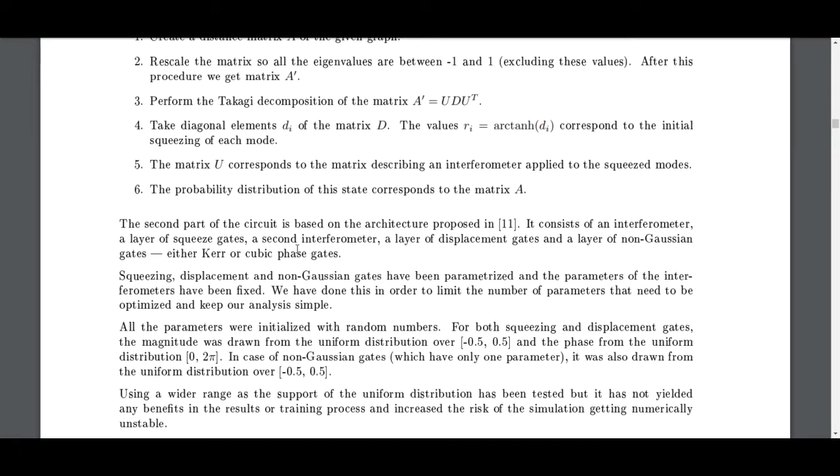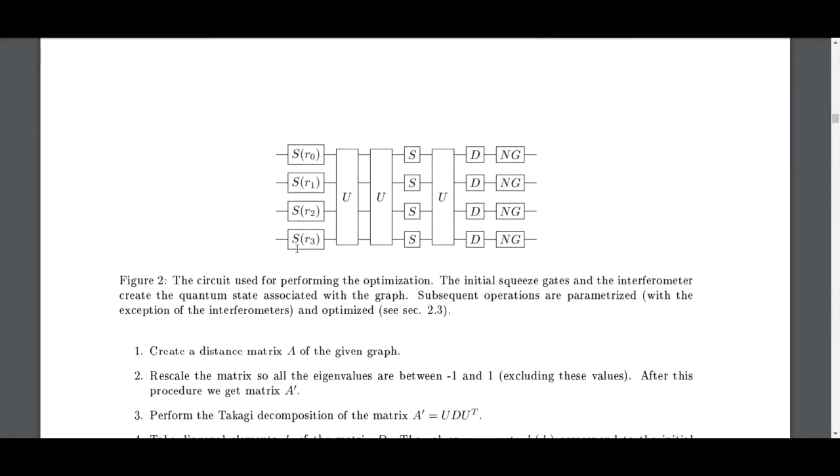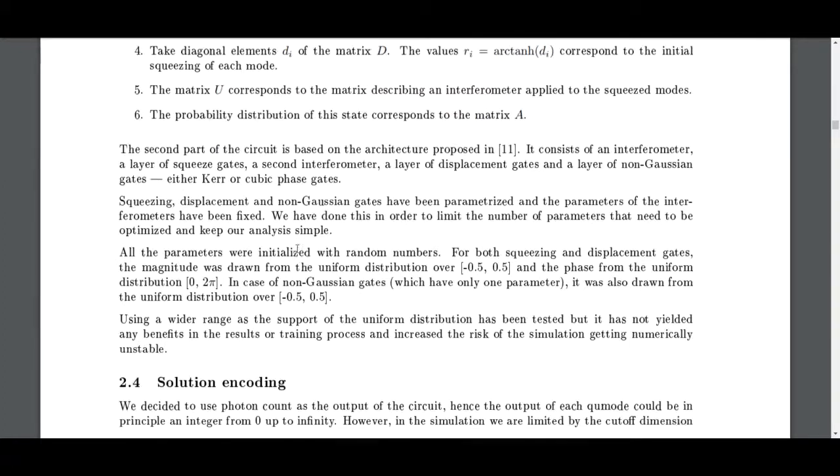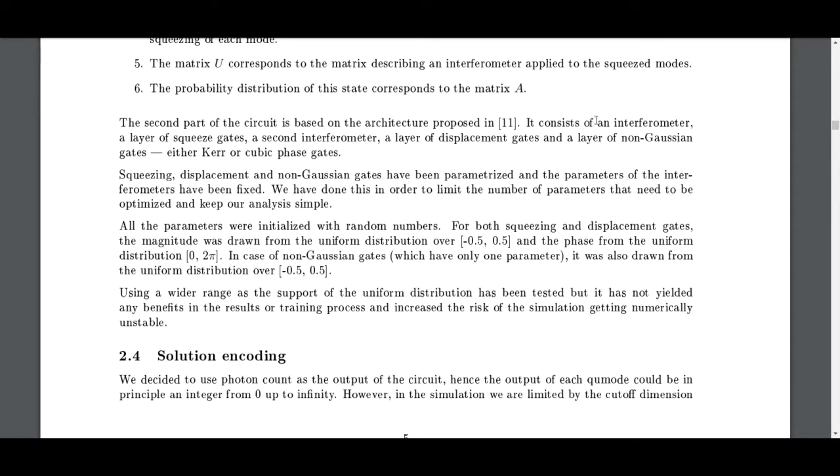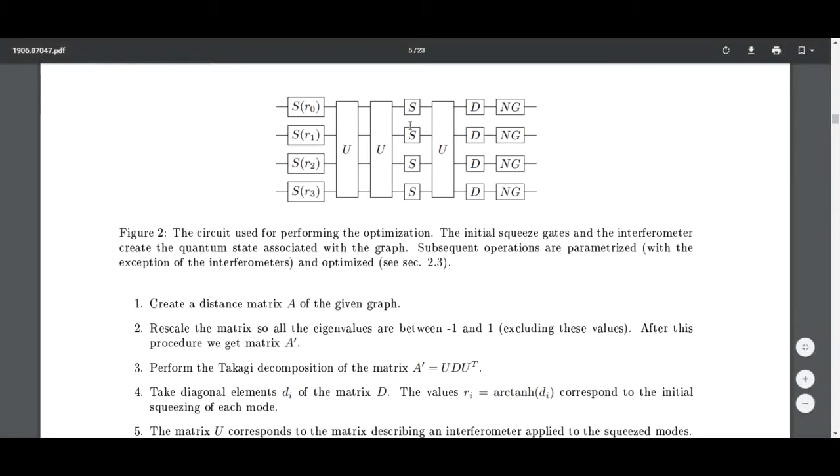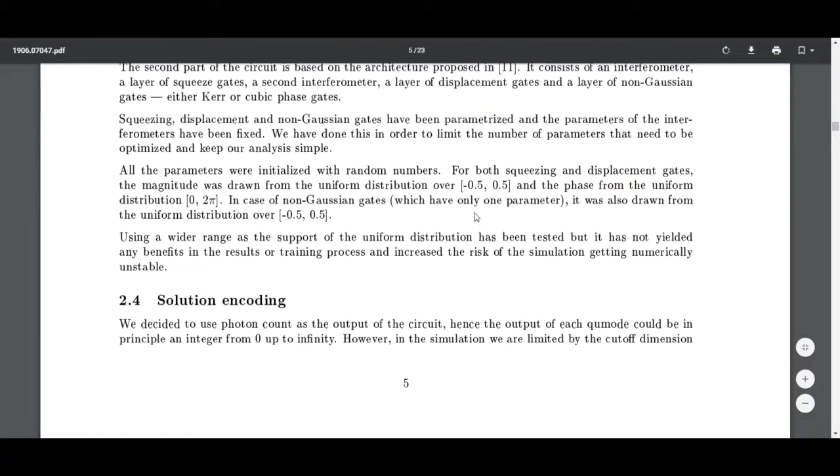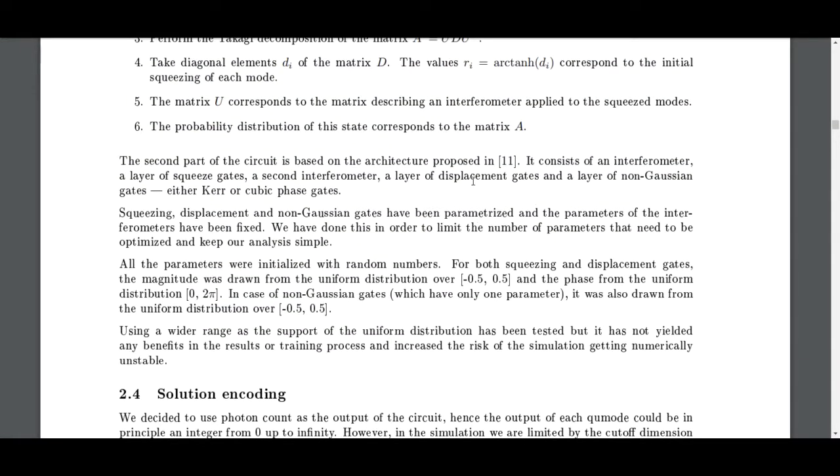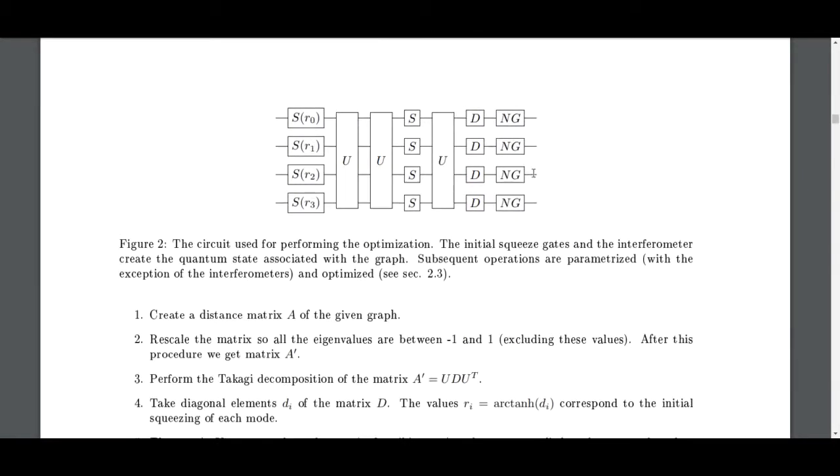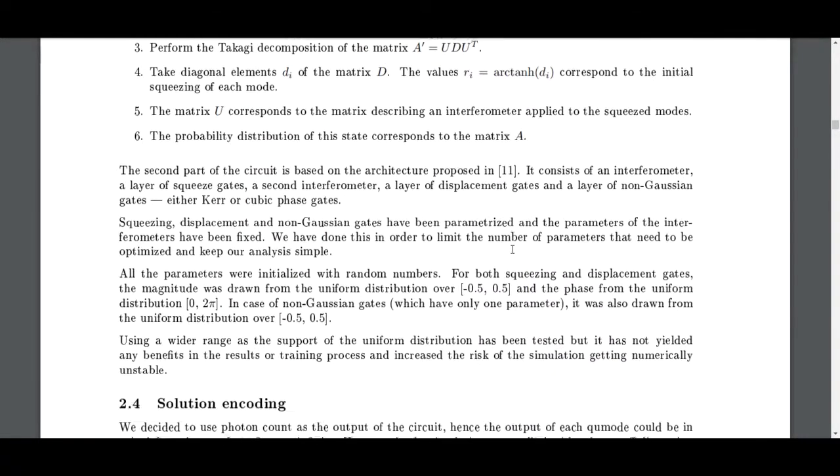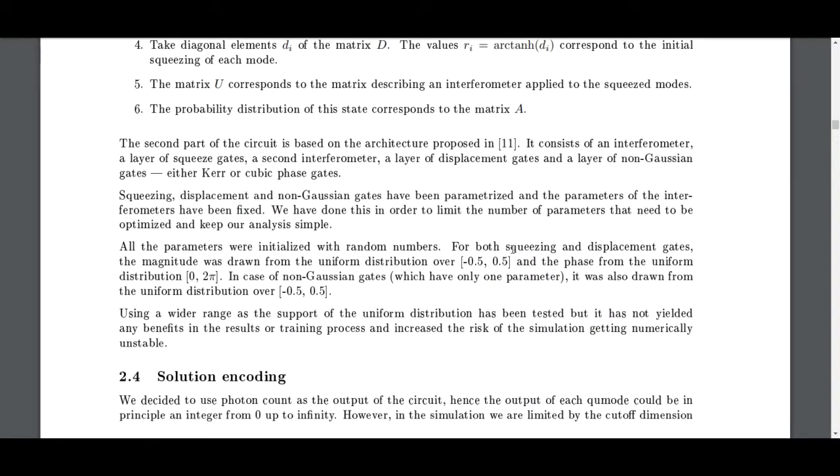You can check out the other videos that I did in the Xanadu stuff if you're not familiar with continuous variable quantum computing - I am really just touching the surface of this. The second part of the circuit is based on architecture proposed in reference 11. It consists of a layer of squeeze gates, a layer of displacement gates, and a layer of non-Gaussian gates - either Kerr gates or cubic phase gates. The NG are non-Gaussian. So it's squeezing, displacement, and non-Gaussian gates. The parameters of the interferometers have been fixed - we have done this in order to limit the number of parameters that need to be trained. Everything is initialized with random numbers.